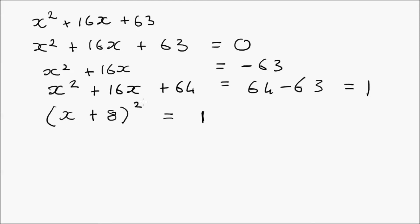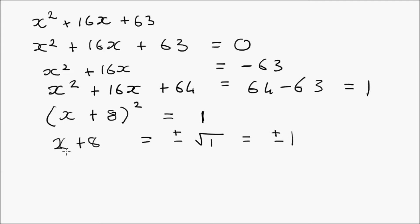If we take the square root of each side, we get rid of the squared. So x plus 8 equals the positive and negative square root of 1. The square root of 1 is 1, so x plus 8 equals positive and negative 1. Those are the conditions for the factors.